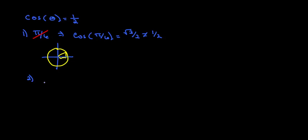For number 2, we'll check pi over 3. So what we want to do is see if cosine of pi over 3, well we know that that is equal to 1 half. So this one checks.